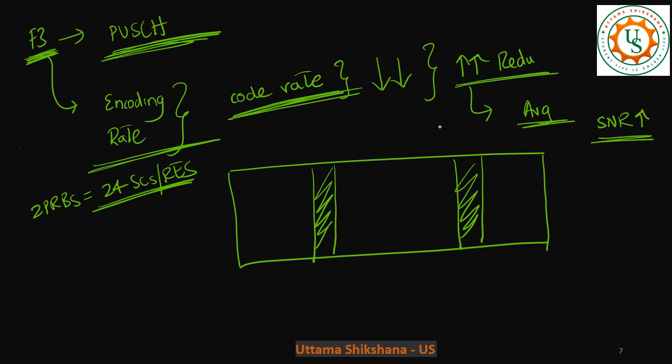So, that's why, even in format 3 as well, it improves the coverage. Let's say, for example, format 3 occupies 2 PRBs. And, let's say, we have the information that can occupy over 2 PRBs, which means, 24 subcarriers.